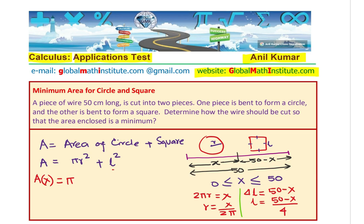So we can write down the area as a function of x as pi times (x over 2 pi) squared plus (50 minus x over 4) squared. So we get an expression for area. Now it is a function of x. To find the minimum value, we can find the critical number and then find the answer.